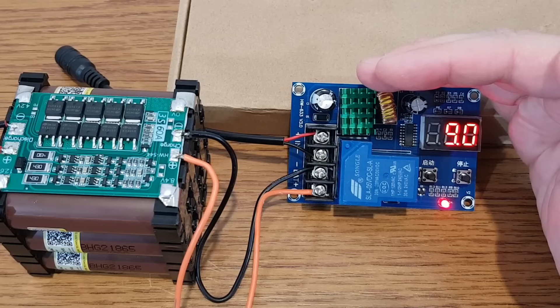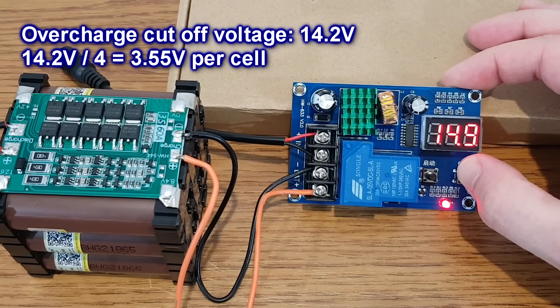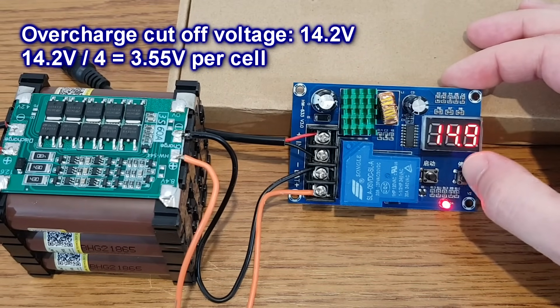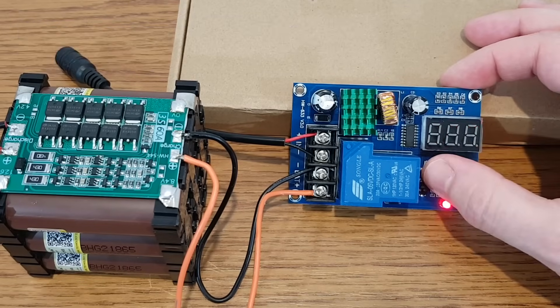You can set this module to end the charging process at any voltage you want, for example 14.2V, that's 3.55V per cell, if the cells are perfectly balanced. I made a video about this charging control board, you can click here to watch it.